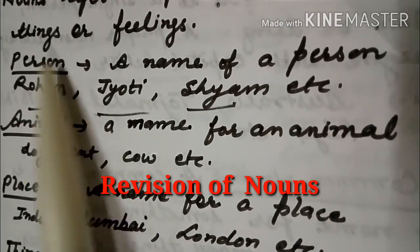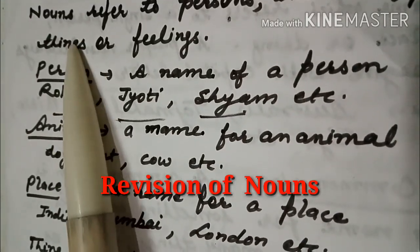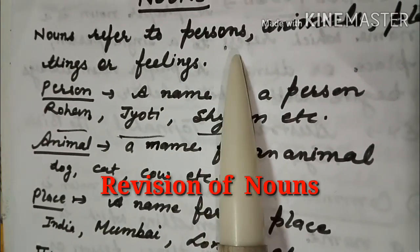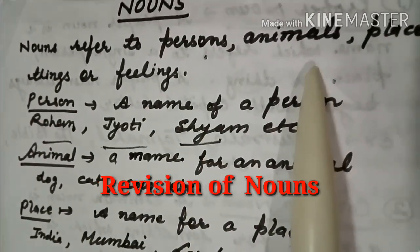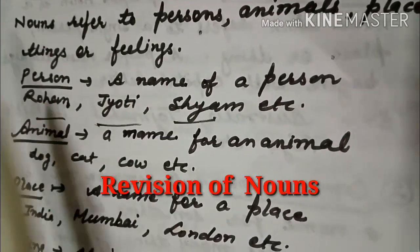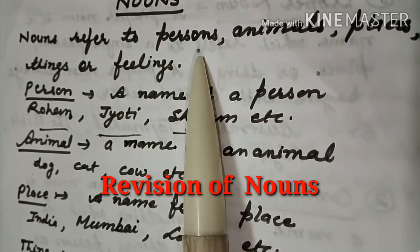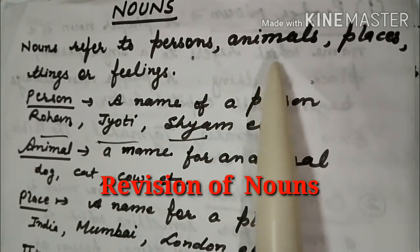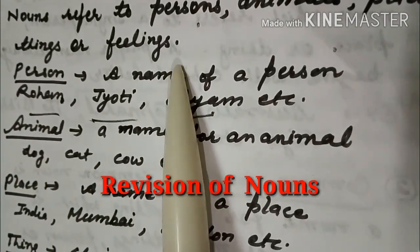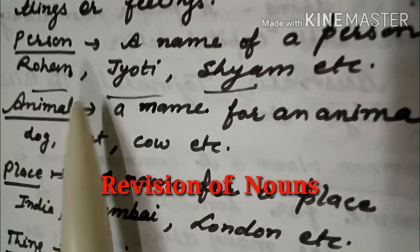Now let us start. Nouns — what is a noun? Nouns refer to persons, animals, places, things, or feelings. Nouns kya hai? Kisay batata hai? Persons ke baare mein, vyakti ke baare mein, animal ke baare mein, place ke baare mein, thing ke baare mein, aur feelings jo hamaari bhaavnaayein hoti hain unke baare mein.